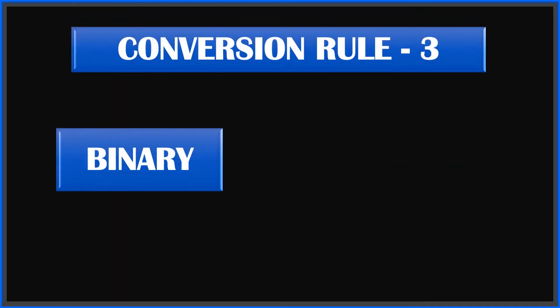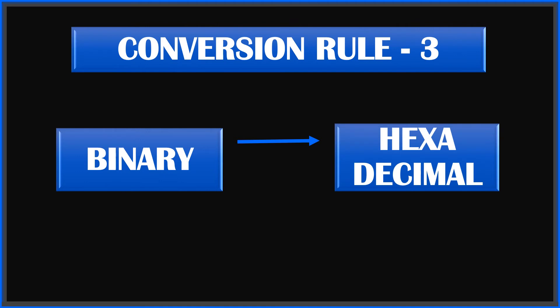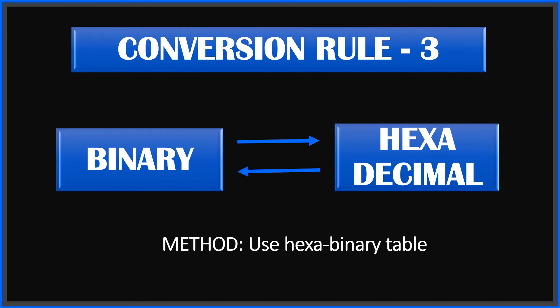Rule number three: if you have to go between hexa and binary, the decimal number system is not involved. We are going to do a direct inter-conversion — binary to hexa and hexa to binary. For this, we will use the hexa-binary table.